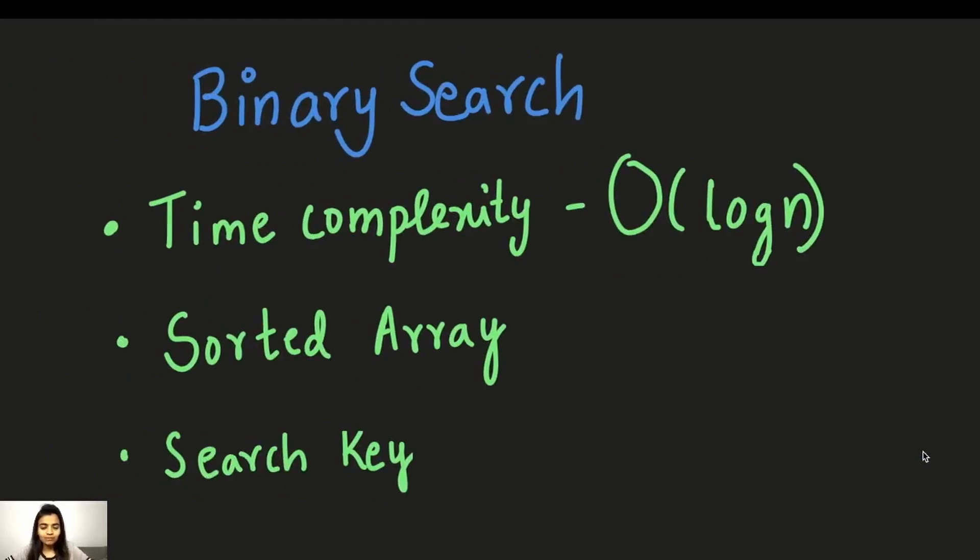Hello everyone, in today's video I'll be talking about binary search. There are a few things that you have to keep in mind before we jump into binary search. The first thing is time complexity of binary search is O of log n, so it's also called logarithmic search. And we assume that every single element is in sorted order. The key that we're going to find in the array is called the search key.